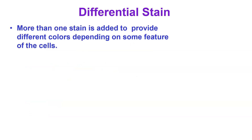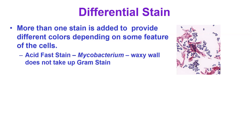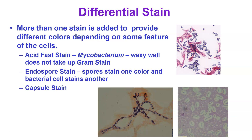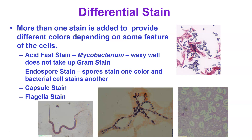We also have differential stains, which use more than one color to give differentiation based on some feature of the cell. This includes the acid-fast stain, which identifies mycobacterium — the waxy wall on mycobacterium does not take up the gram stain, and the acid-fast procedure allows the stain to be taken up. We have the endospore stain, which shows endospores inside the cell as openings where stain was not taken up. We have the capsule stain, which stains everything except the capsule, making the clear capsule visible by contrast. And we have the flagella stain, which adds thickness to flagella so they stand out and can be seen.